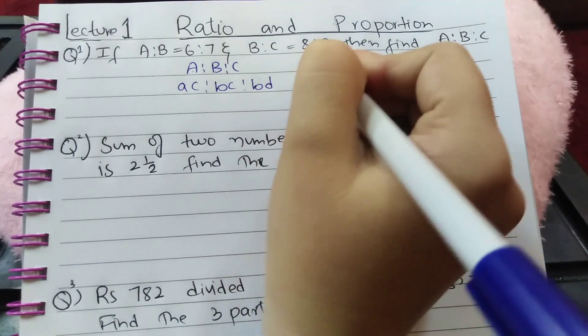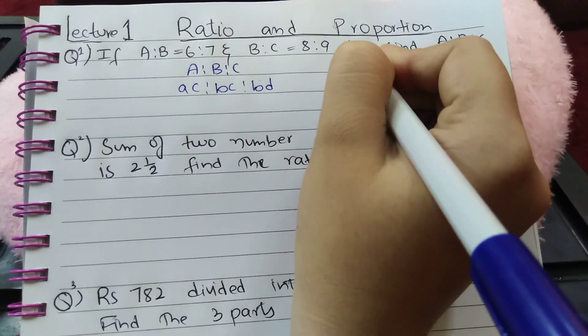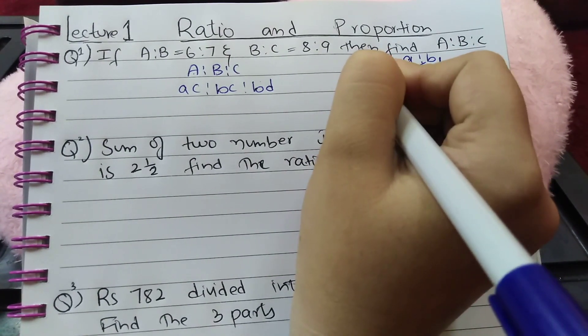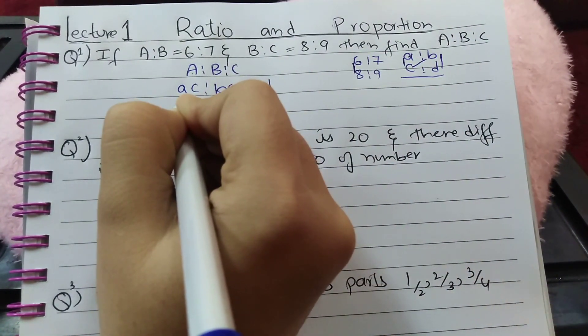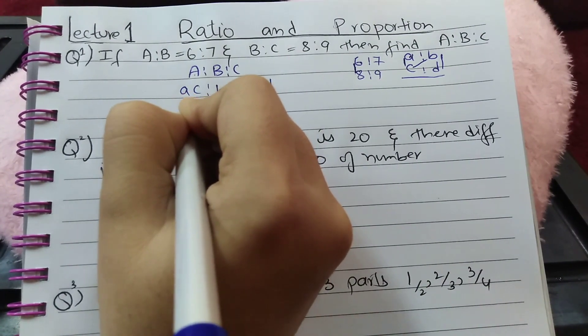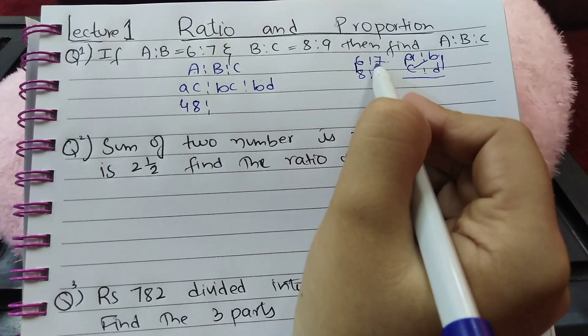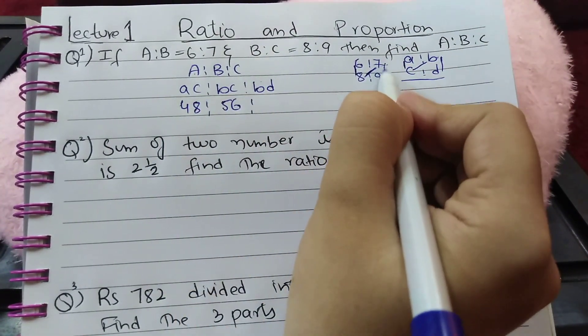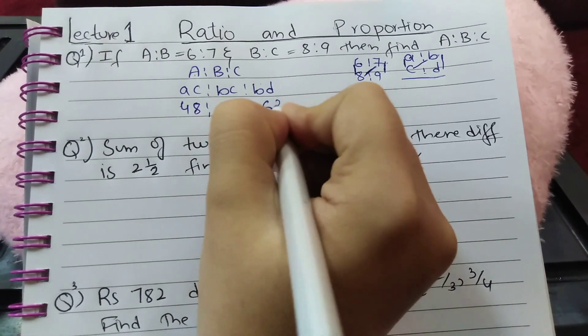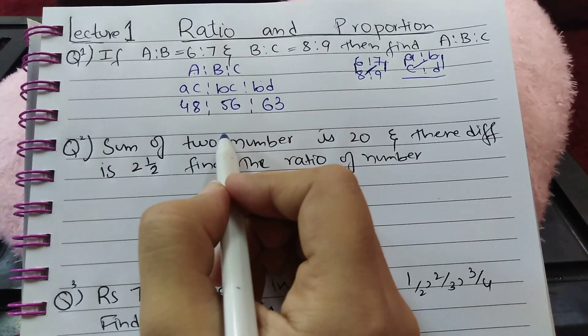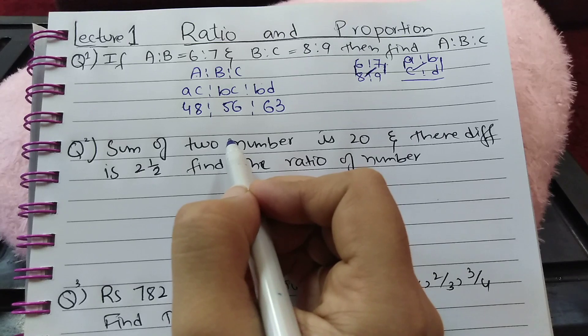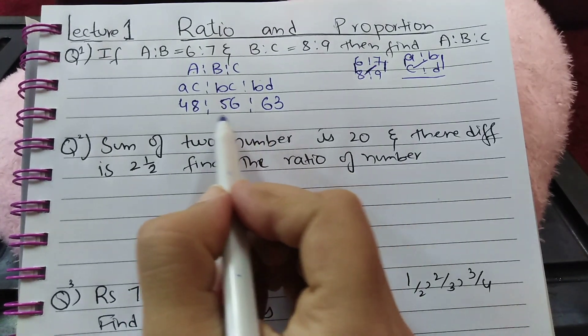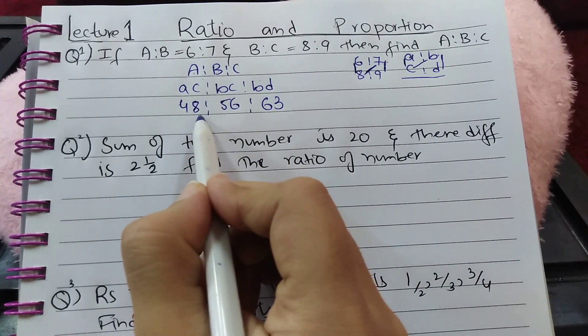Here A:B is given as 6:7 and B:C is given as 8:9. To find A, multiply 6 with 8 - 6 × 8 = 48. For B, 8 × 7 = 56. For C, 7 × 9 = 63. If there is any common factor between these ratios you can cancel out, but here there is no common factor. So A:B:C = 48:56:63.